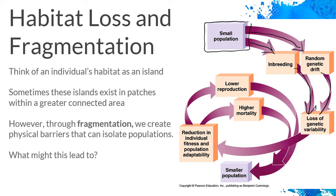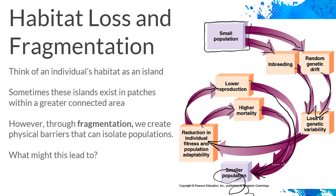This loss of genetic variability from both genetic drift and inbreeding results in a reduction in individual fitness and population adaptability — individuals tend to have more genetic diseases, and the population has fewer genetic options to respond after a disaster. If a disease comes through, you're more closely related to all the organisms so more of you are likely affected. This results in lower reproduction and higher mortality, leading to an even smaller population. That spiral continues, which is why it's called an extinction vortex — and it is a direct product of habitat loss and fragmentation.